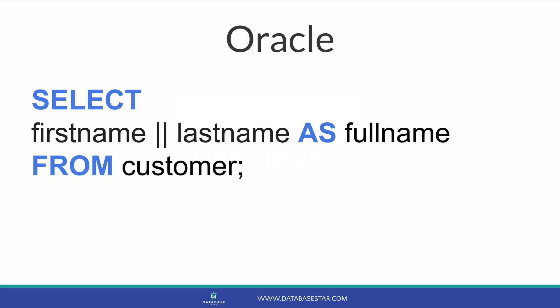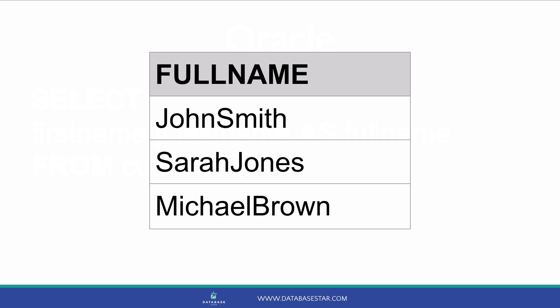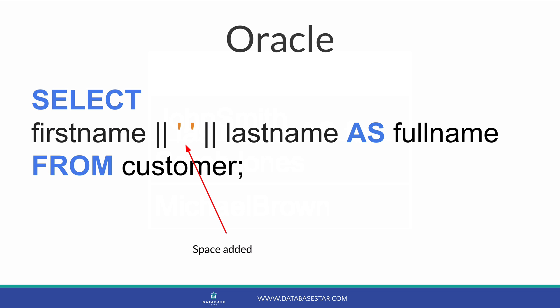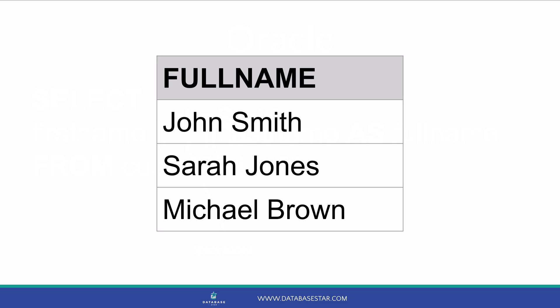You can use the pipe characters on table columns as well. This example shows how you would select the first name and last name columns and concatenate them. There is no space between the two values because we didn't specify one. However, this is easy to fix — we can add a space character inside single quotes in between the first name and last name using another set of double pipes. We're essentially concatenating three strings: the first name, a space character, and a last name. When we run this query, we can see the space between the two names.